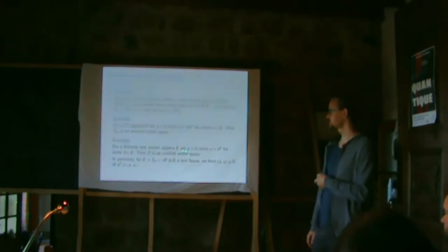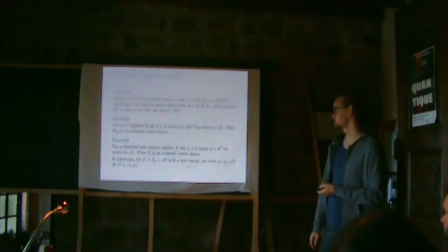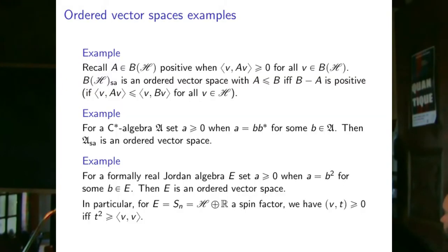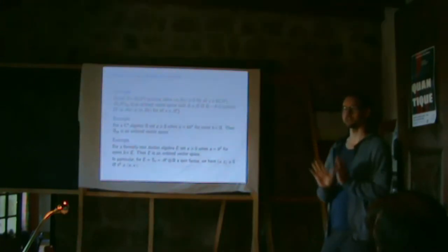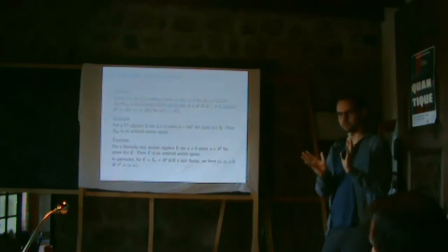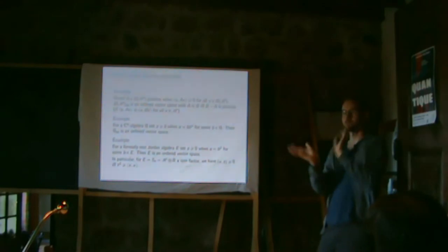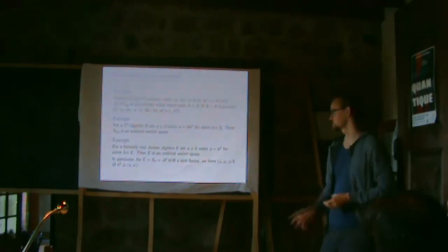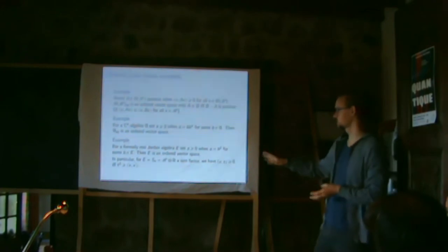A specific interesting example: if we take our algebra to be a spin factor — which I discussed briefly in the last lecture — then an element (vector, t) is positive if and only if t² is larger than the inner product of the vector with itself. You might recognize this as a light cone. The spin factor's order structure is just a positive light cone and a negative light cone, like a Minkowski space causal structure.